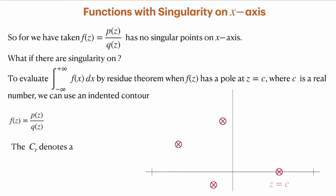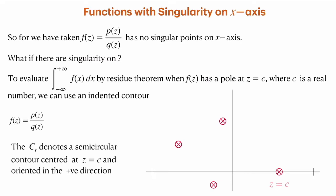So we use the technique of the indented contour. We use a semi-circular contour c_r centered around z = c, oriented in the positive direction. We cover up this singularity point on the real axis using a semi-circular contour c_r with radius r and origin at z = c. We then proceed by taking the integral from minus R all the way along the real axis, use the circular arc to avoid the singular point, and then return to the real axis to continue with the integral.